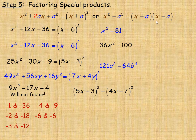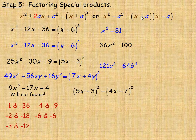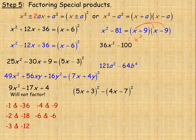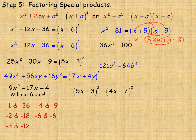The last special product we're covering is the difference of two perfect squares. x squared minus a squared factors into x plus a times x minus a — the two factors are the same except one has a plus and one has a minus. For example, x squared minus 81: 81 is 9 squared, so this factors into x plus 9 times x minus 9. Checking by expanding: x times x is x squared, x times negative 9 is minus 9x, 9 times x is plus 9x, and 9 times negative 9 is minus 81. The two middle terms are opposites and add to zero, leaving x squared minus 81.